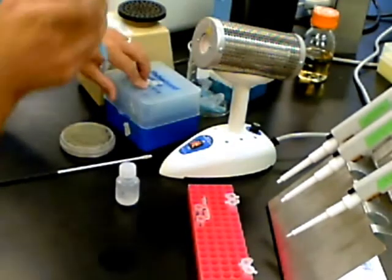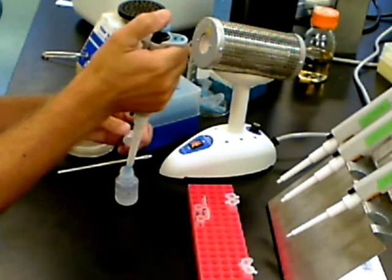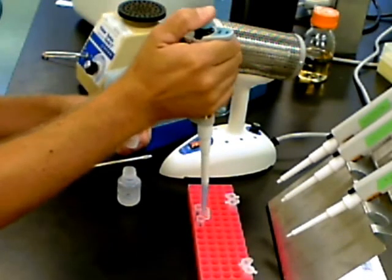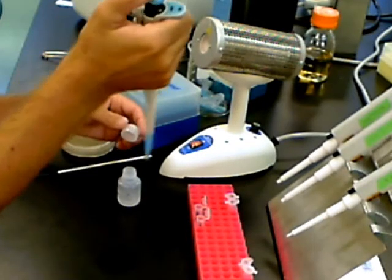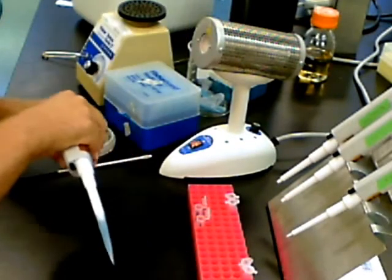Use a sterile one milliliter pipette and add 250 microliters of ice cold calcium chloride solution to each tube. The calcium chloride solution is used to make the cells more competent to be transformed, or to insert the DNA into the cell.